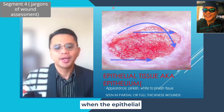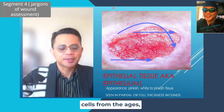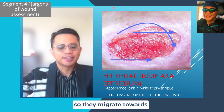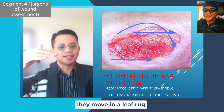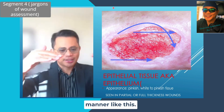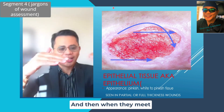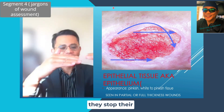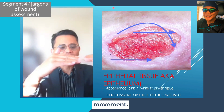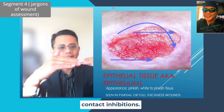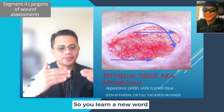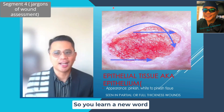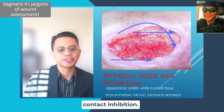When epithelial cells from the edges migrate towards the center, they move in a leaf-frog manner. When they meet at the middle, they stop their migration and movement. That is what we call contact inhibition.